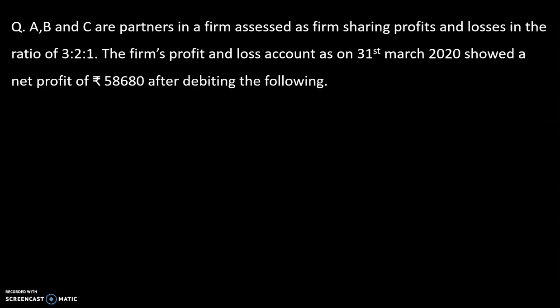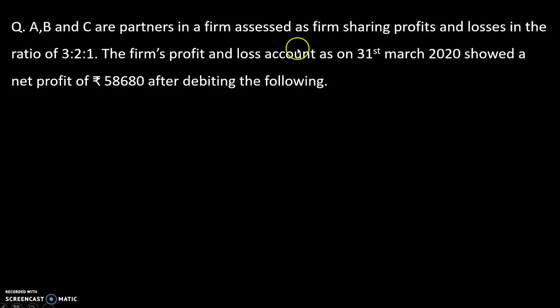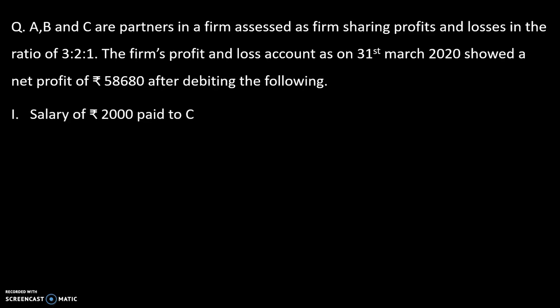Now moving on to a problem. A, B and C are partners in a firm assessed as a firm, sharing profits and losses in the ratio of 3:2:1. The firm's profit and loss account as on 31st March 2020 showed a net profit of Rs. 58,680. Net profit as per profit and loss account is Rs. 58,680 after deducting the following items.